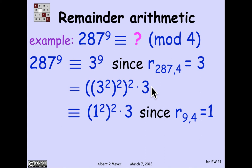And 9 is congruent to 1 mod 4. So that means I can replace 3 squared by 1. And it becomes the outer 2 squared stays. It becomes 1 squared squared.